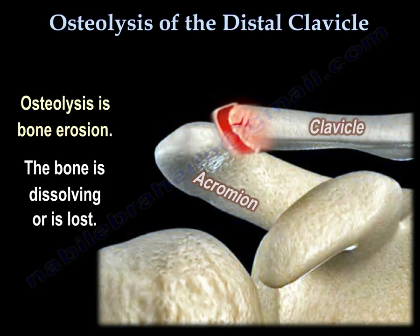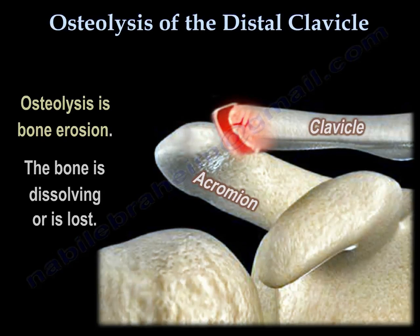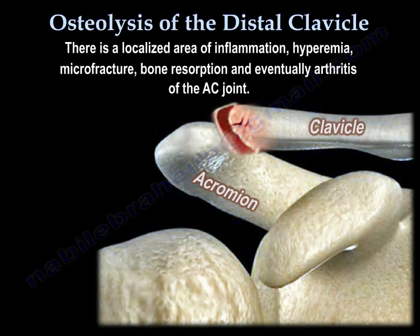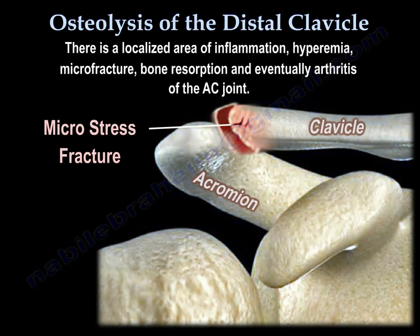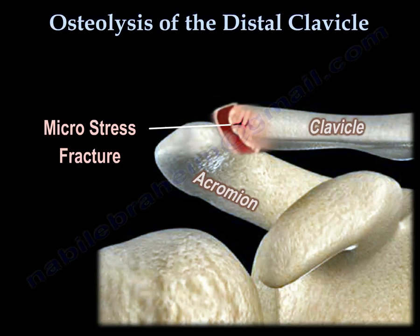Osteolysis is bone erosion — the bone is dissolving or lost. There is a localized area of inflammation, hyperemia, microfracture, and bone resorption, eventually leading to arthritis of the AC joint. The condition affects the distal end of the clavicle due to microstress fractures.